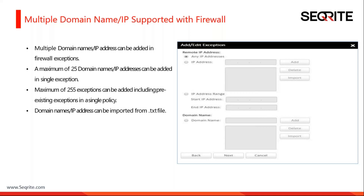To use this, go to the respective policy, then go to the firewall settings and add a new rule where you can see the change added with respect to domain names. Remote domain names can be added so that instead of IP addresses, the domain names can be directly set as remote locations in the firewall rule.